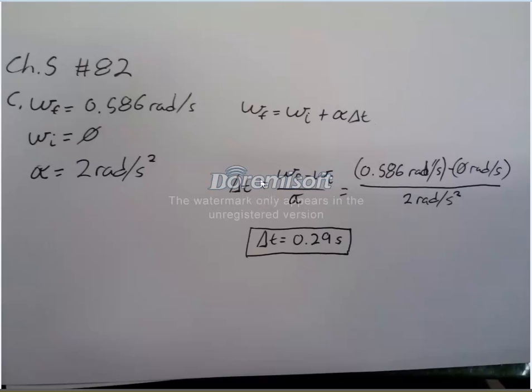And we want to solve for Δt, because it's asking us how long it takes for this penny to fall off. Plug in all our numbers, and we come out to Δt equals 0.29 seconds. And that's it. That's how you solve for the time it takes for that penny to fall off.